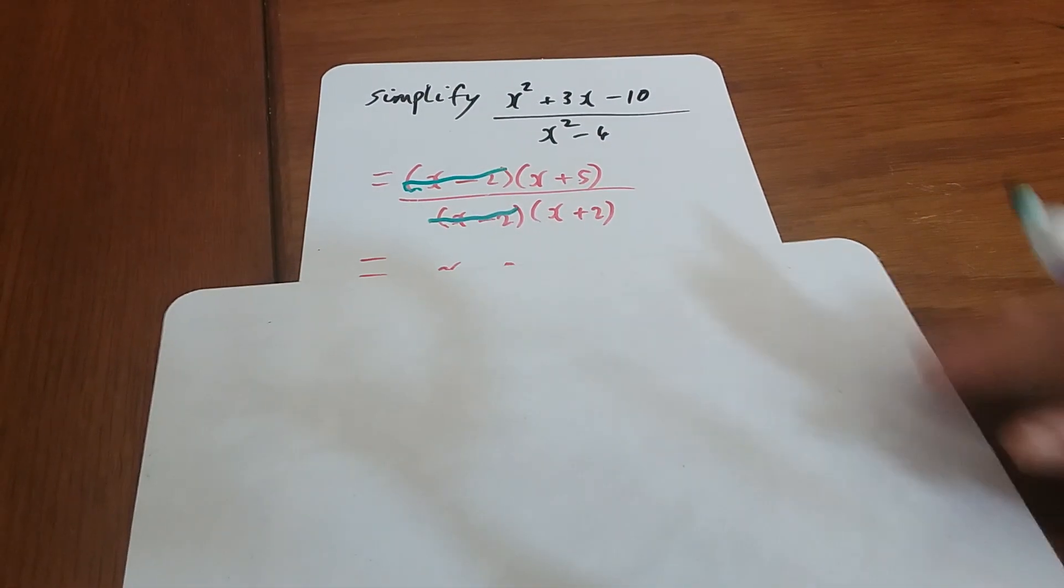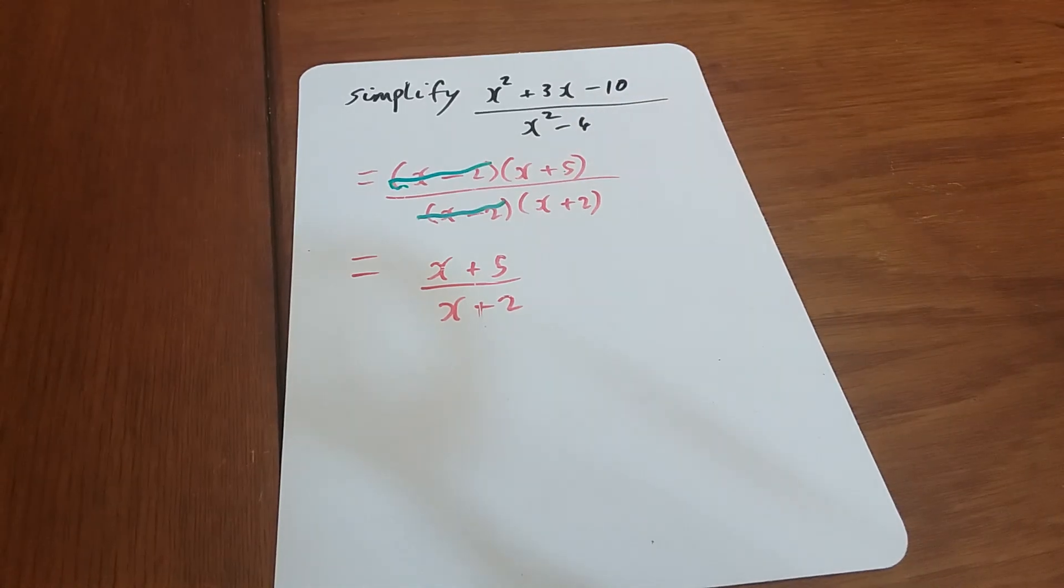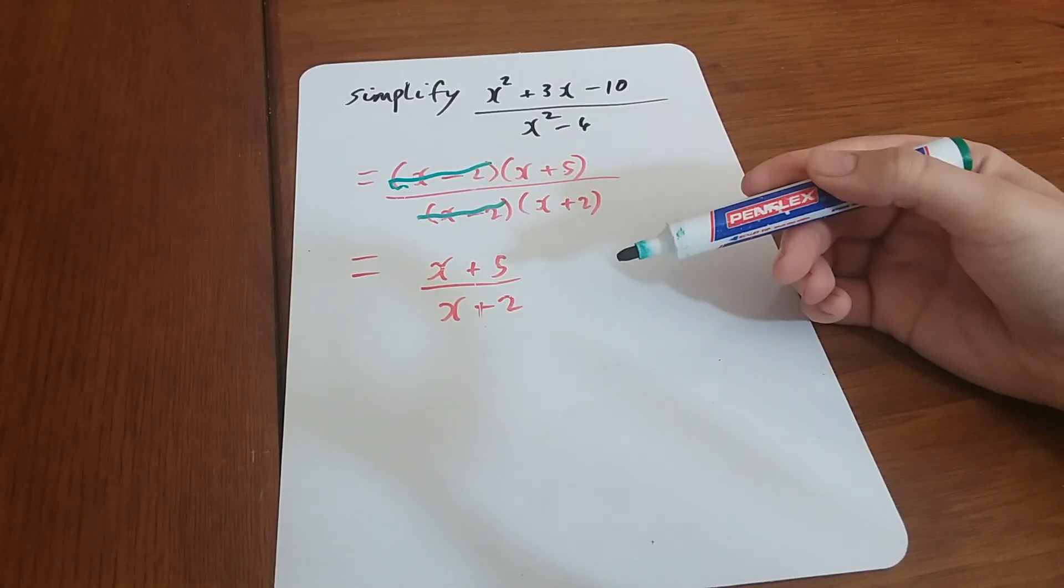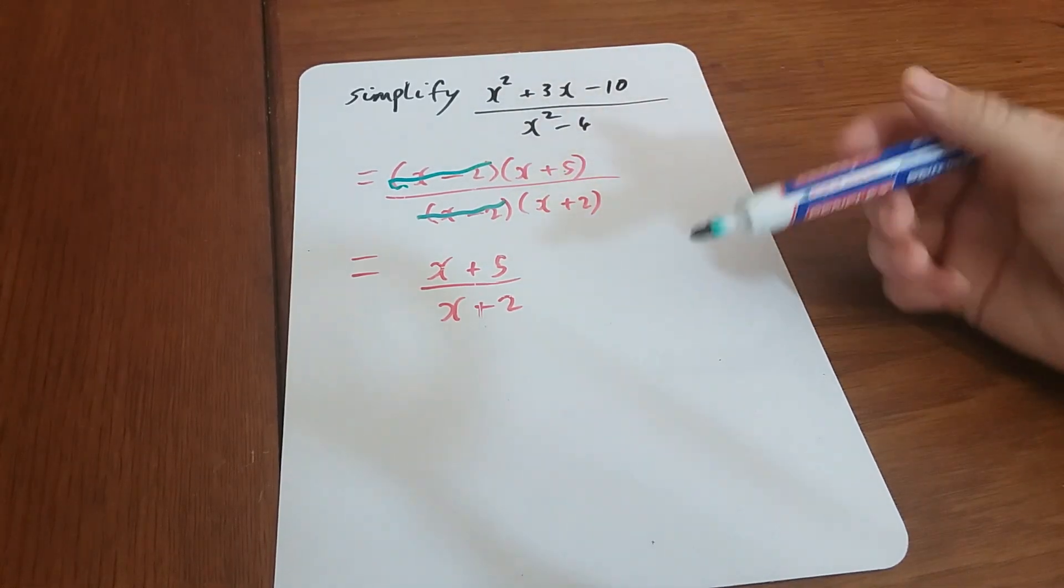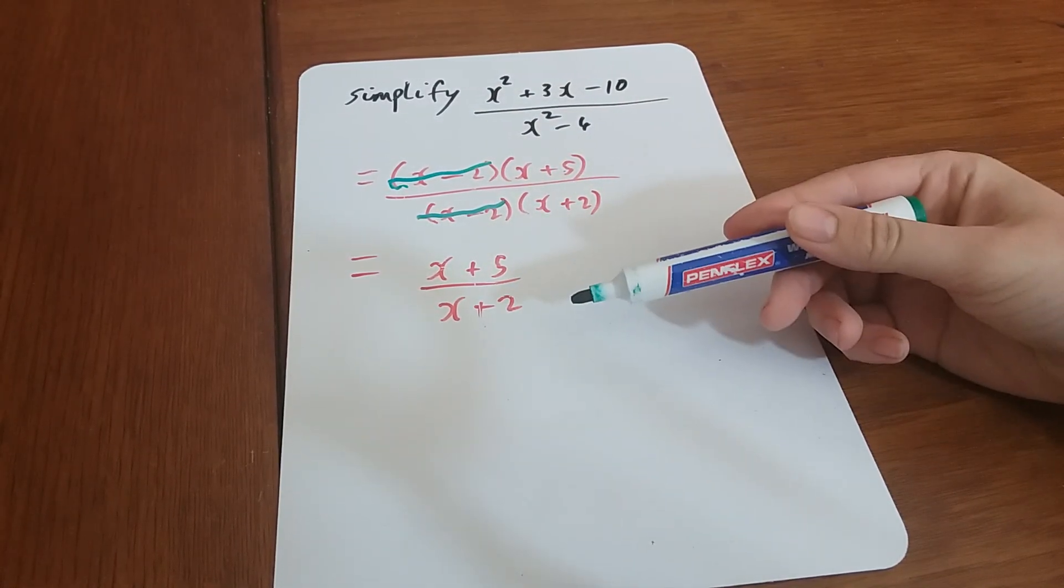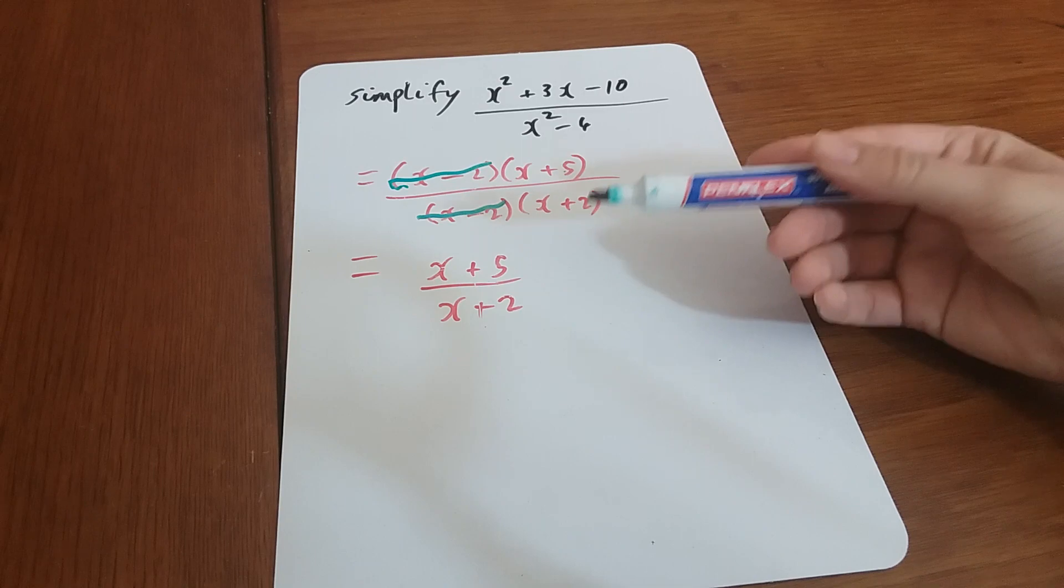We end up with just that thing as a fraction. Now I've taken off the brackets there because they don't really matter. It's fine if you leave them in as well. This is a simplified version of this because there are no other common factors here other than one. This is as simplified as it can get.